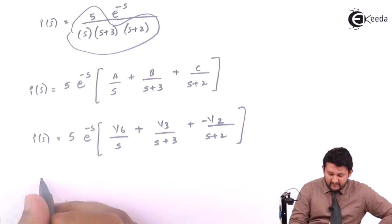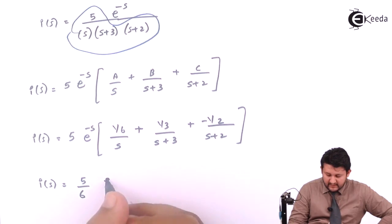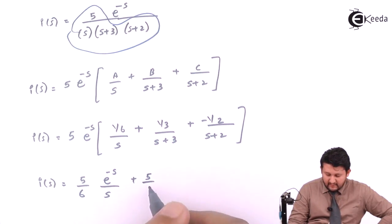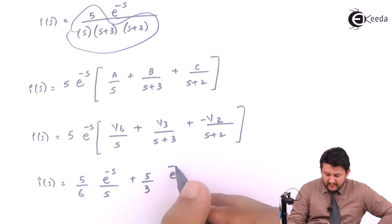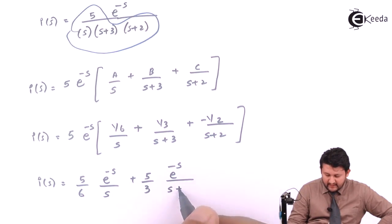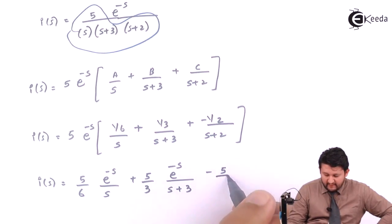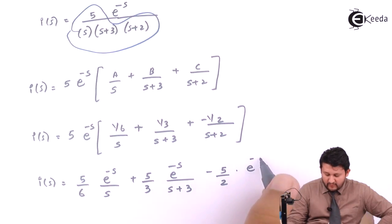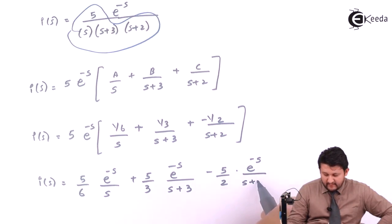Simplify and put the value. So you get I of S equal to phi upon 6 e raise to minus S upon S plus 5 upon 3 e raise to minus S upon S plus 3, minus 5 upon 2 e raise to minus S upon S plus 2.